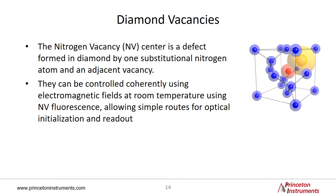Diamond vacancies — often referred to as nitrogen vacancy (NV) centers — are literally a defect formed in a diamond through substitution at the atomic level. NV centers are good at holding quantum information, such as electron spin states, with good coherence times on the order of a second, and research shows this may be extended. Diamond vacancies have great application in quantum computing, as well as medical imaging and nanoscale sensing.